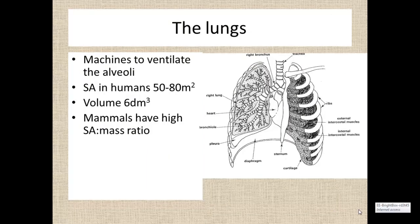This is the human respiratory system, and in it are of course the lungs. The respiratory system is a big machine to ventilate the alveoli — we have the lungs themselves, the diaphragm, the ribs, and the intercostal muscles, all working to ventilate the alveoli. The lungs themselves in humans have a massive surface area: 50 to 80 metres squared, often compared to a tennis court. With a volume of only 6 dm cubed — that's 6 litres — our surface area to volume ratio is very, very high.